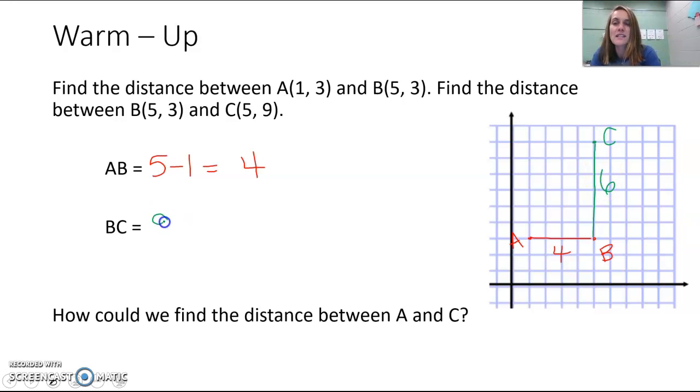So BC is actually taking that 9 that we have on the y minus the 3 that we have for the y for the other one equals 6. We're at 9 up here at the top for C, and then we're counting how many down does it take us to get to B, which is at 3, so 6.